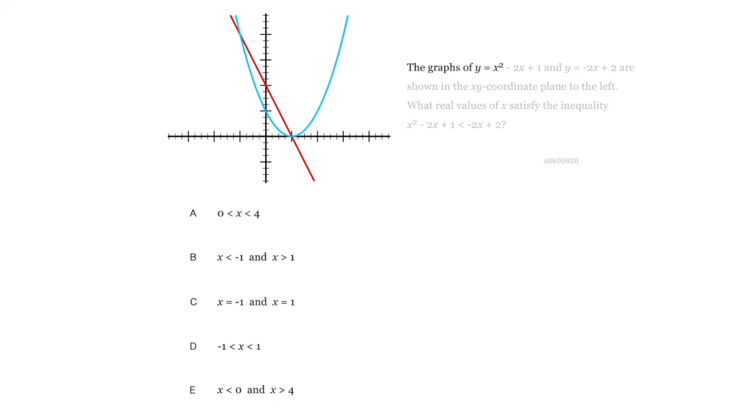The graphs of y = x² - 2x + 1 and y = -2x + 2 are shown in the xy-coordinate plane to the left. What real values of x satisfy the inequality where this one is less than this one? Press pause and answer the question.